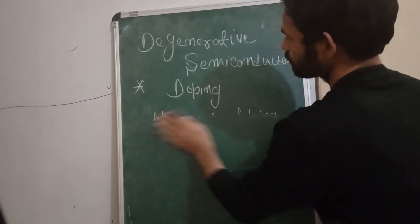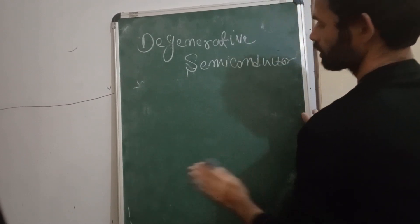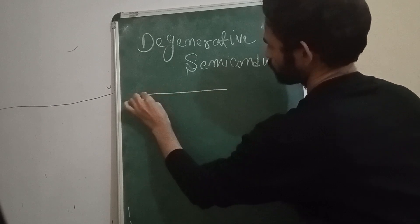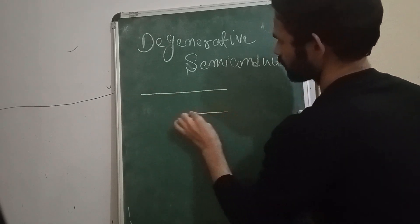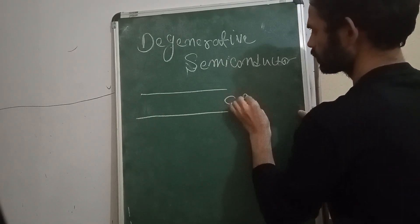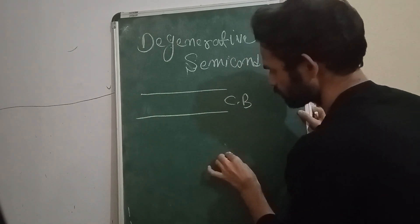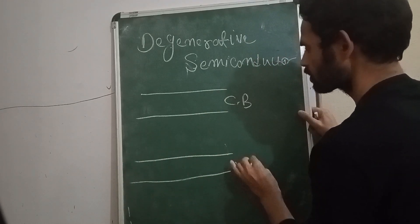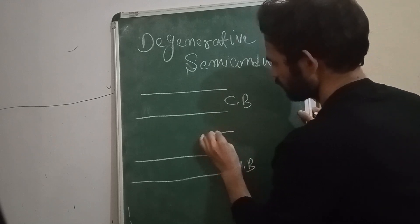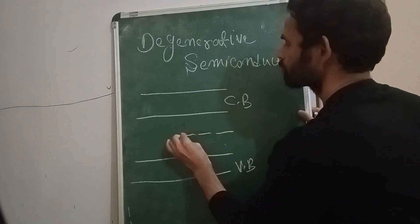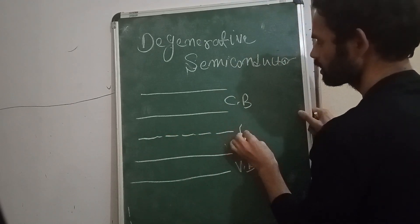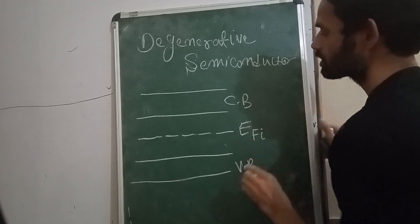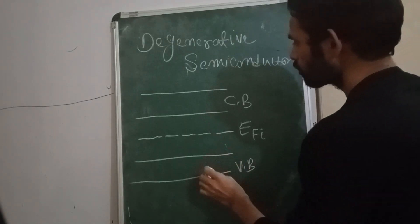If you see the degenerative semiconductor diagram, this is my conduction band, and this is my valence band. Here is my intrinsic Fermi energy level.